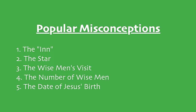Let's read Luke chapter 2, verses 1 through 7. 'In those days, a decree went out from Caesar Augustus that all the world should be registered. This was the first registration when Quirinius was governor of Syria. And all went to be registered, each to his own town. And Joseph also went up from Galilee, from the town of Nazareth, to Judea, to the city of David, which is called Bethlehem, because he was of the house and lineage of David, to be registered with Mary, his betrothed, who was with child. And while they were there, the time came for her to give birth. And she gave birth to her firstborn son, and wrapped him in swaddling cloths, and laid him in a manger, because there was no place for them in the...'